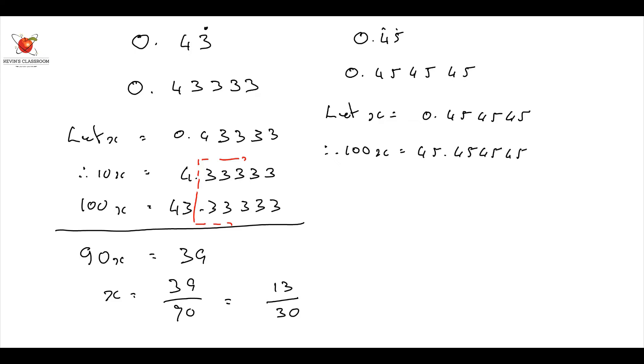What have I done again? I've got everything behind the decimal as the recurring part. Now, if I subtract them, what do I get? I get 90x... or rather, sorry, 99x, my bad. 99, because that's a 1 over there, right? 99x is going to be 45.